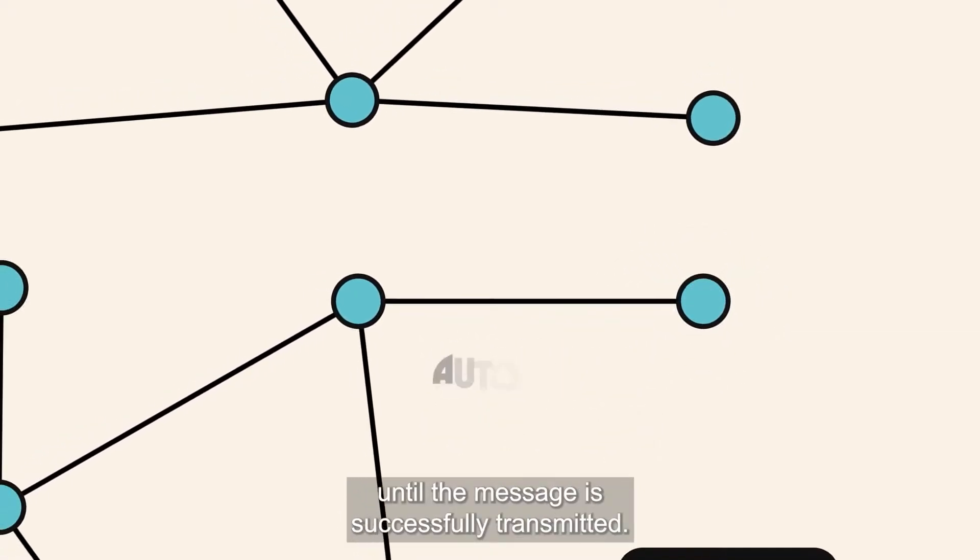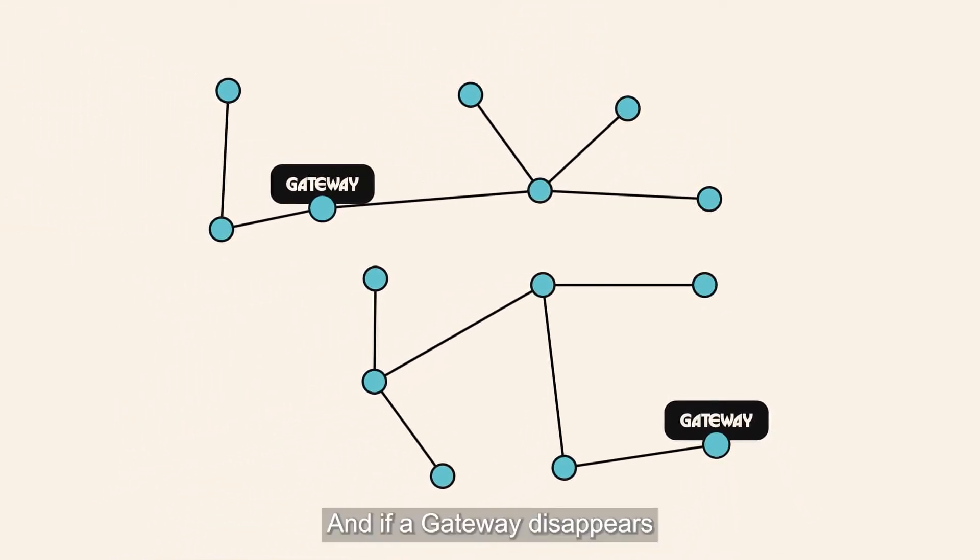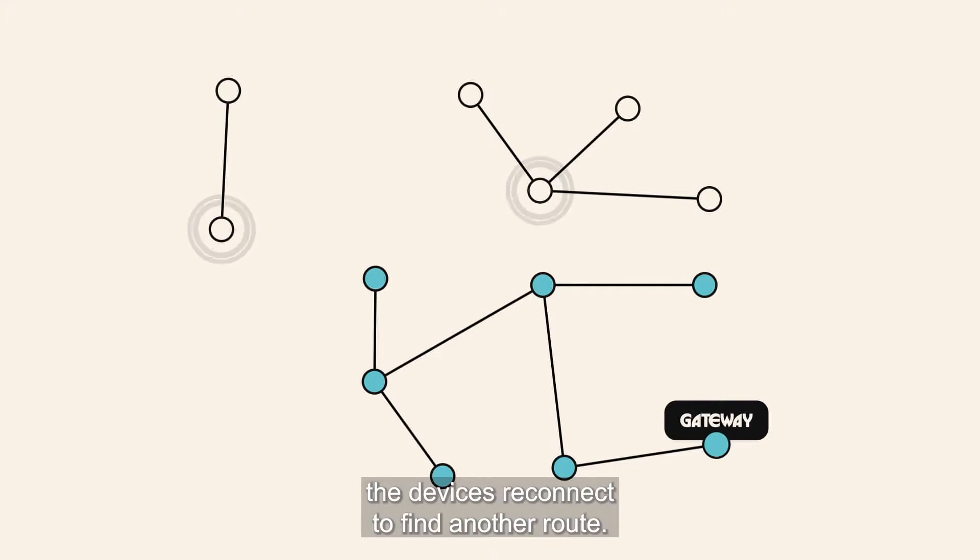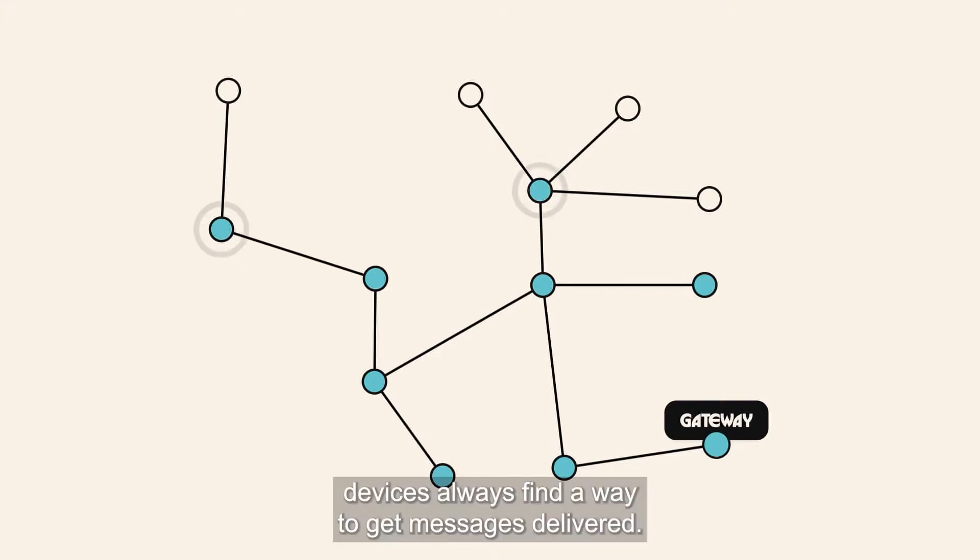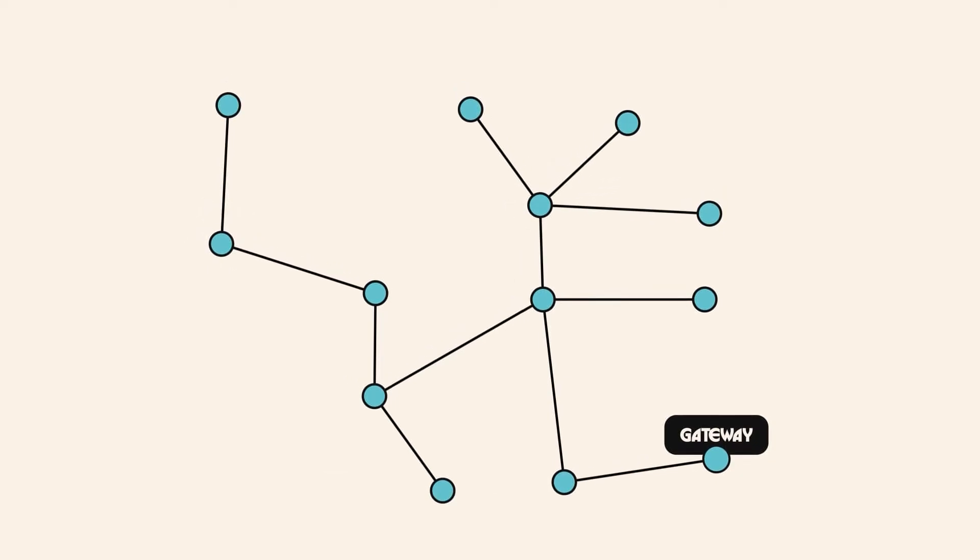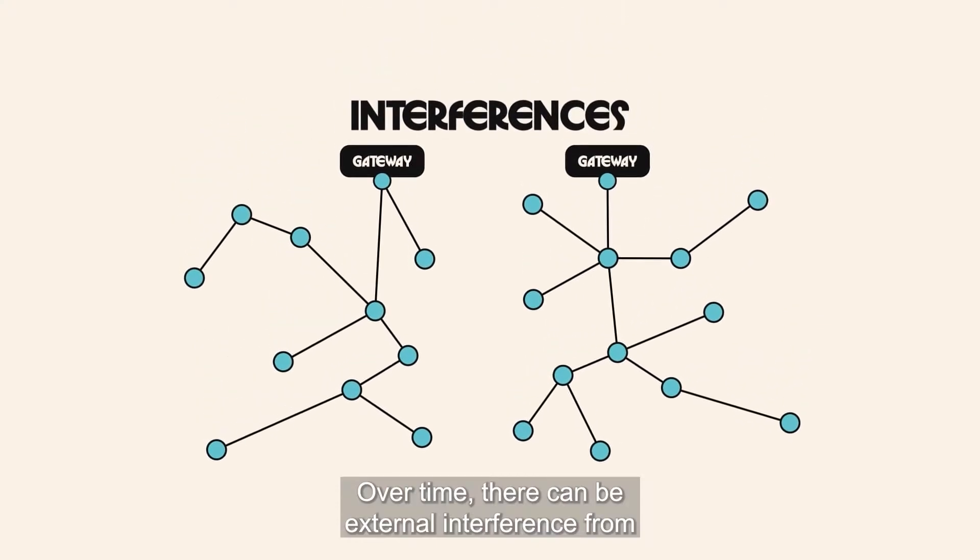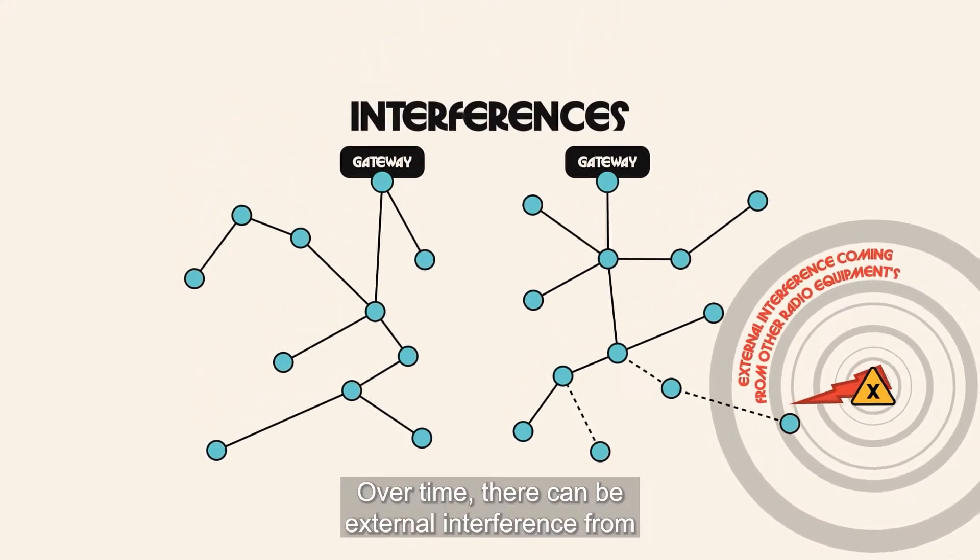until the message is successfully transmitted. If a gateway disappears, the devices reconnect to find another route. In a Wirepass network, devices always find a way to get messages delivered. Over time, there can be external interference from other